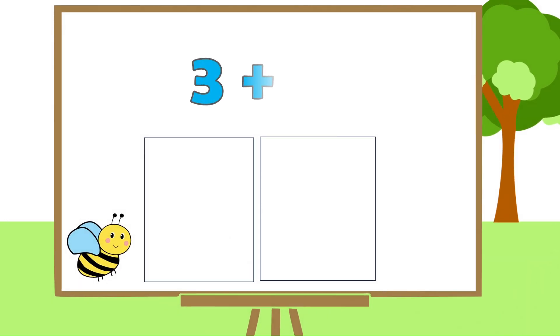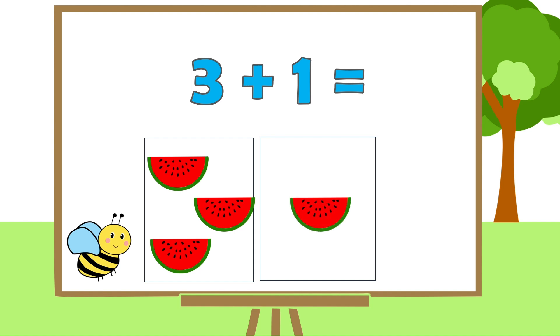Now, let's find out what 3 plus 1 is. Consider some watermelon pieces. Place 3 pieces under the number 3. And 1 piece under the number 1. Let's count them all now. 1, 2, 3, 4. So, the addition of 3 and 1 gives 4.